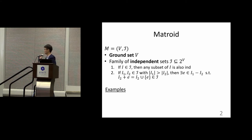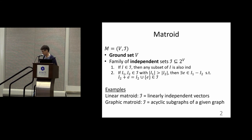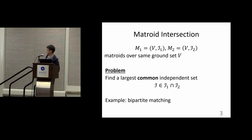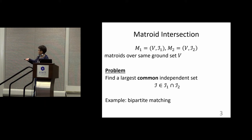There are many examples of matroids. The linear matroid is just the set of linearly independent vectors, and in combinatorics we have the graphic matroid, which is just a set of acyclic subgraphs of a given graph. The matroid intersection problem we study today is about finding a common independent set: given two matroids M1 and M2 over the same ground set, we want to find a set that is independent for both M1 and M2 and maximize its size. A famous example is bipartite matching, which is a special case of matroid intersection.